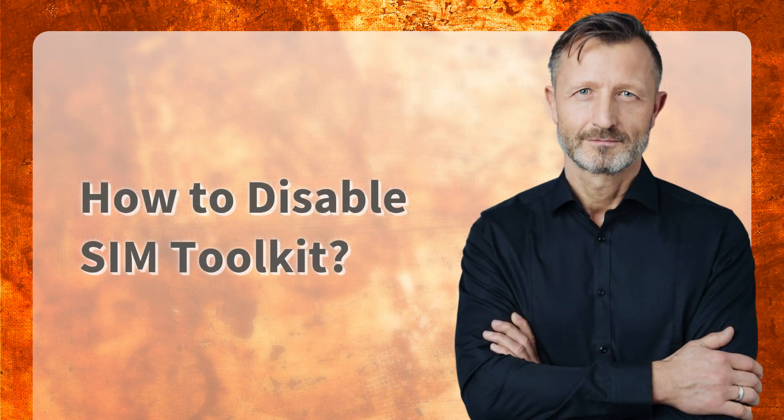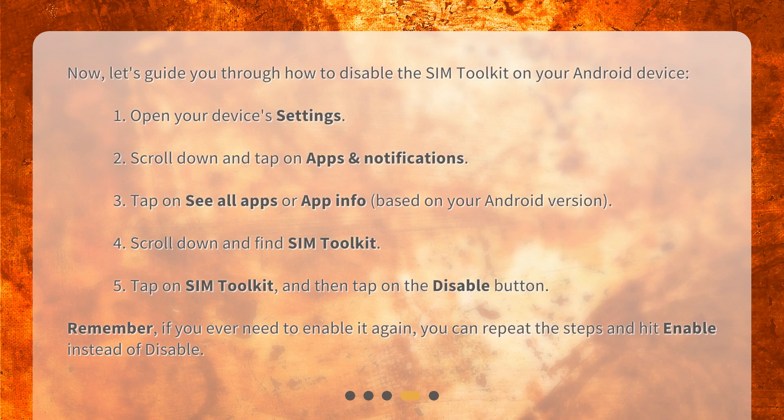Now, let's guide you through how to disable the SIM Toolkit on your Android device. 1. Open your device's settings. 2. Scroll down and tap on Apps and Notifications. 3. Tap on See All Apps or App Info, based on your Android version. 4. Scroll down and find SIM Toolkit. 5. Tap on SIM Toolkit, and then tap on the Disable button. Remember, if you ever need to enable it again, you can repeat the steps and hit Enable instead of Disable.